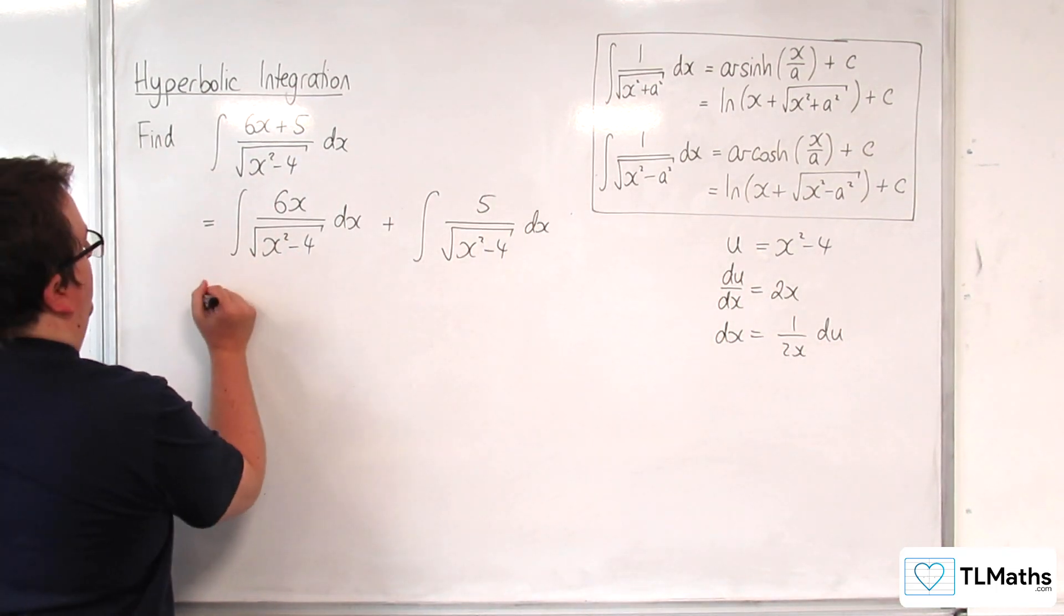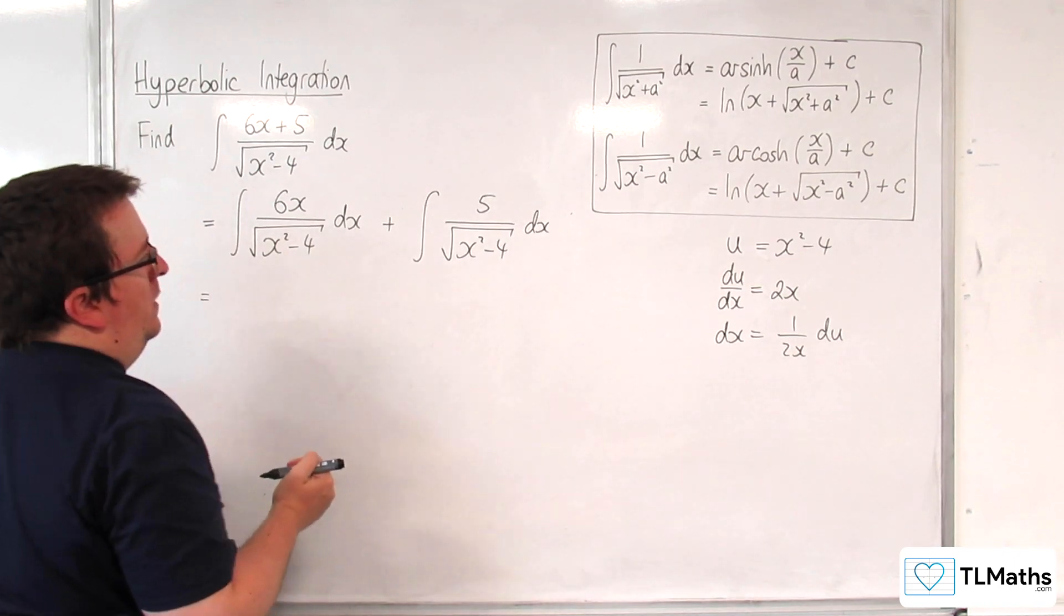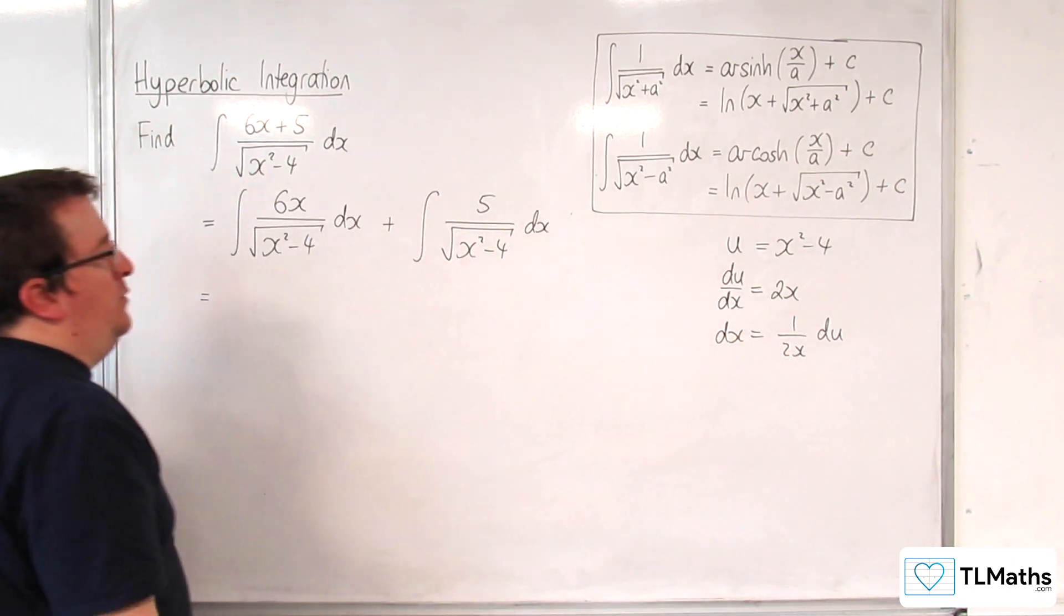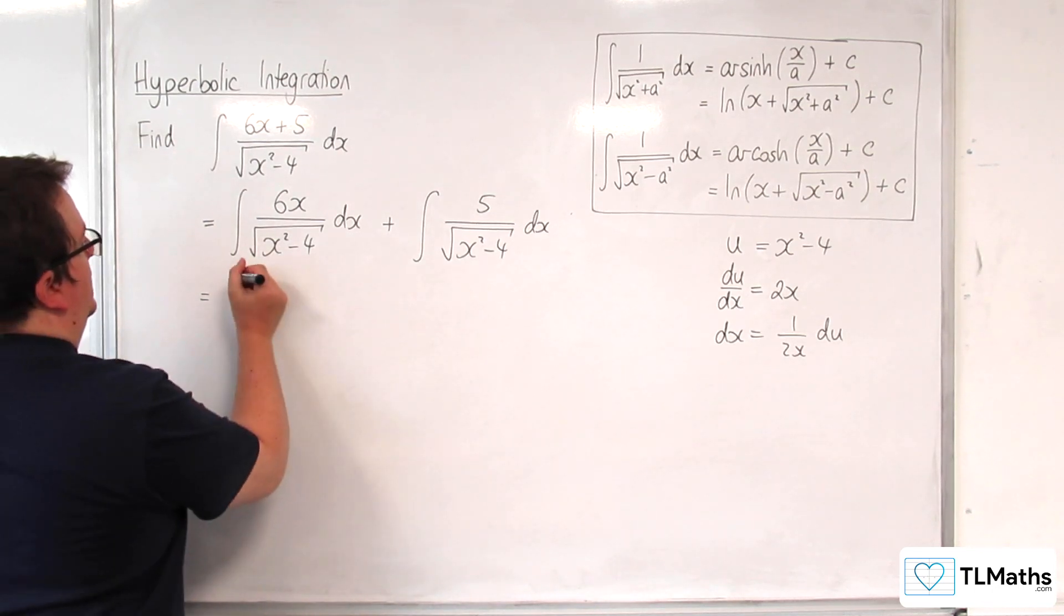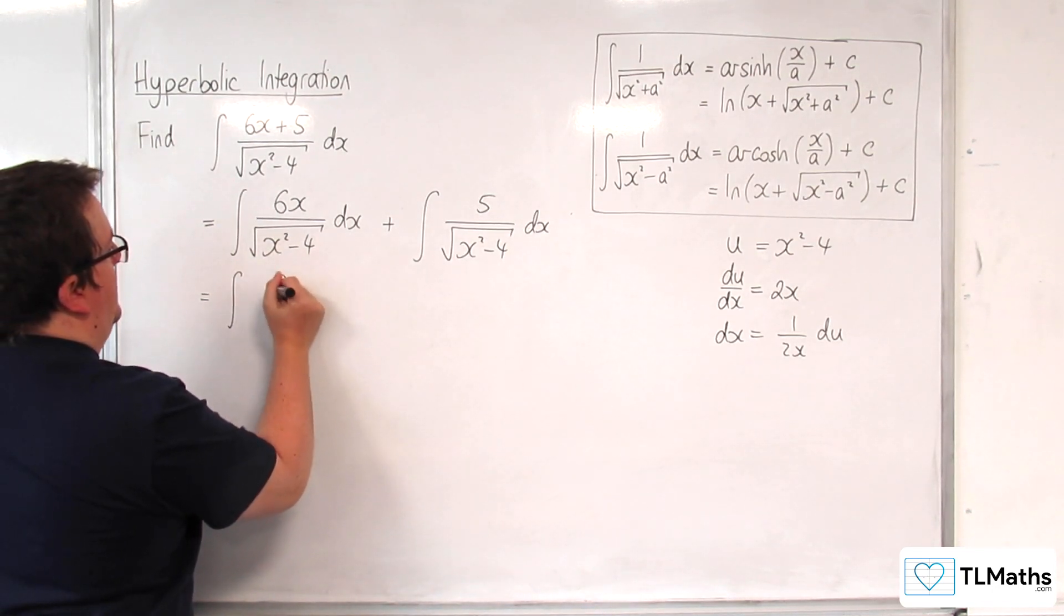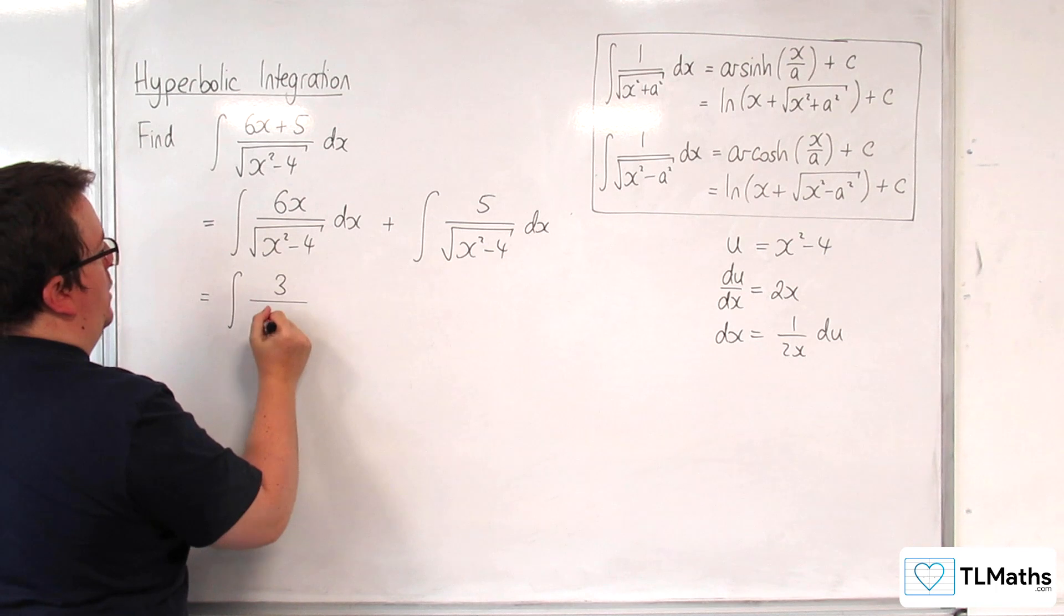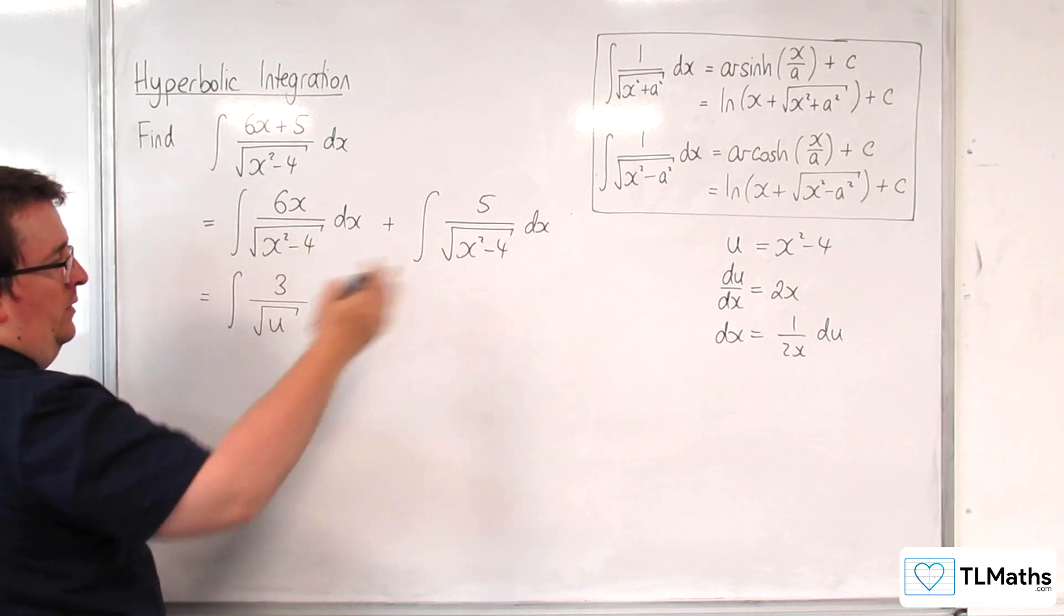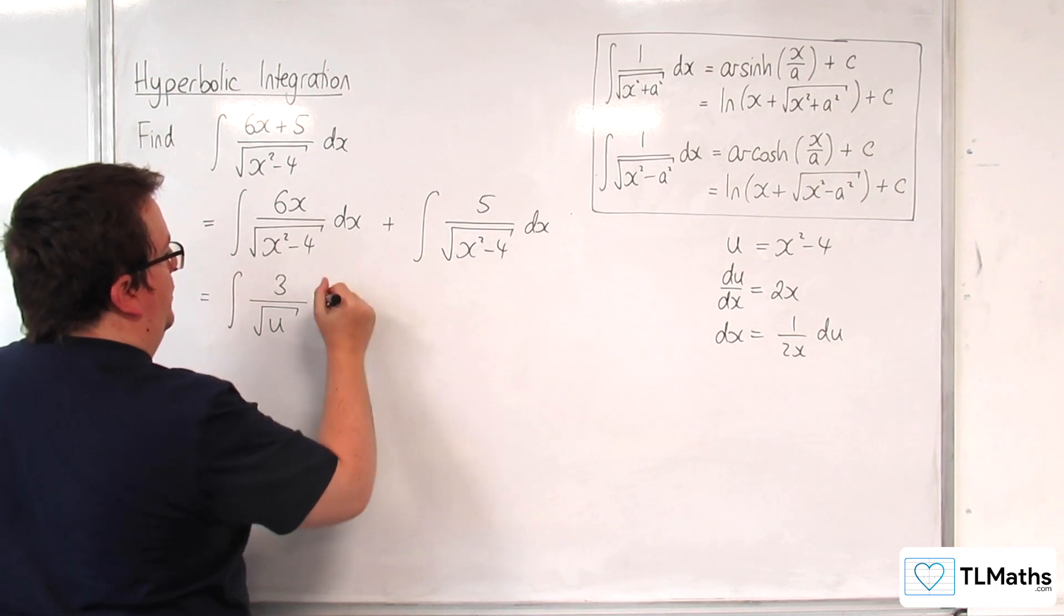Okay so this is going to be equal to we've got the 6x and we've got the 1 over 2x du so that would be 3 so we're going to have the integral of 3 over the square root of u and dx has already been replaced with the 1 over 2x du so that's just du.